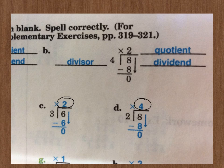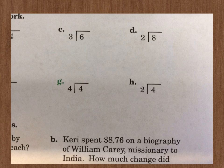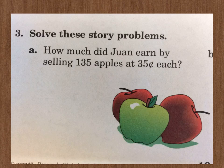Now, we have two story problems to do. 3A, the first one, it's asking, how much did Juan earn by selling 135 apples at 35 cents each? So, you need to multiply your 135 times your 35 cents.